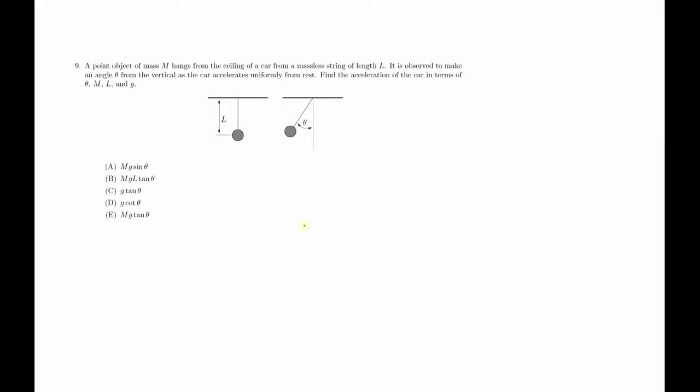A point object of mass M hangs from the ceiling of a car from a massless string of length L. It is observed to make an angle theta from the vertical as the car accelerates uniformly from rest. Find the acceleration of the car in terms of theta, mass, length of string, and gravity constant.